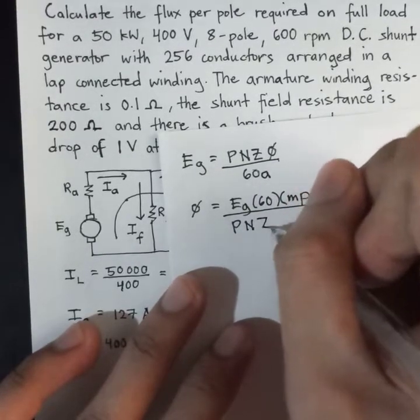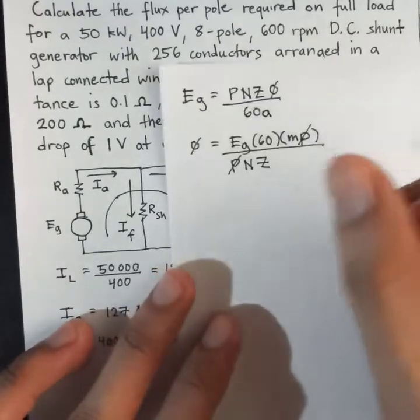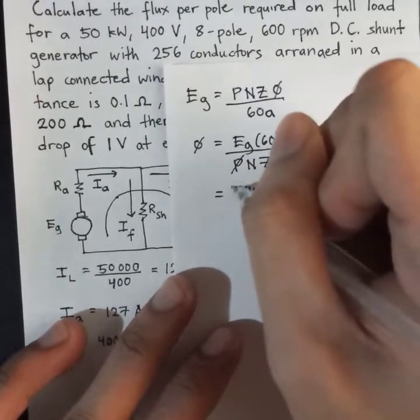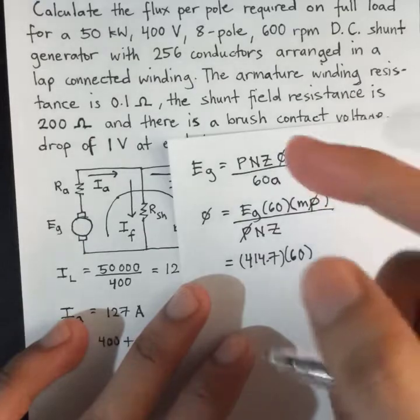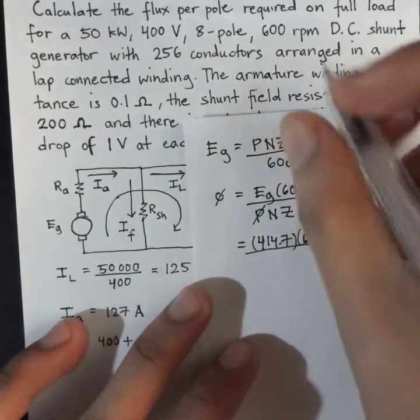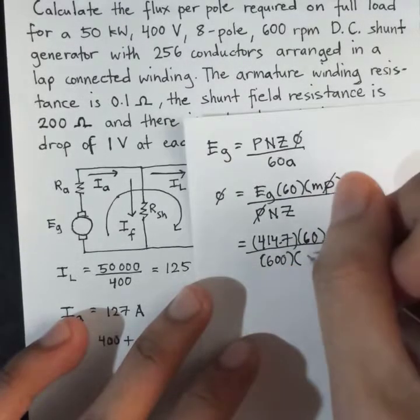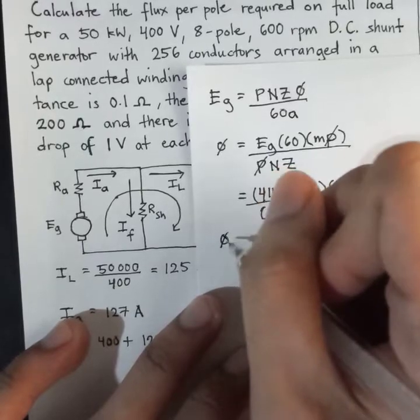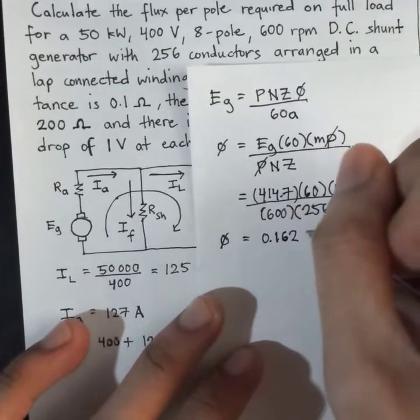The number of poles will cancel out. Then substituting the values, we get 414.7 times 60, the M being 1 since the multiplicity of the winding is just simplex, that is simply 1. N being the RPM, that is 600 times number of conductors Z, 256. Therefore, the flux per pole in Weber is equal to 0.162 Weber.